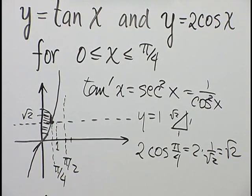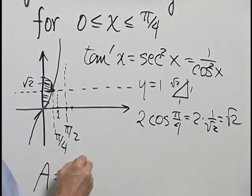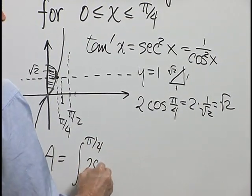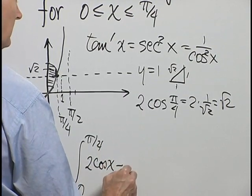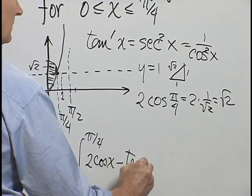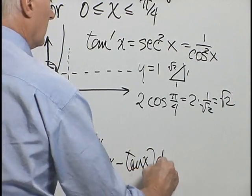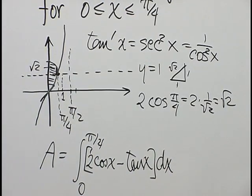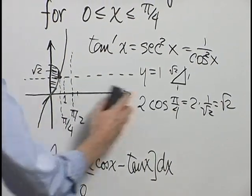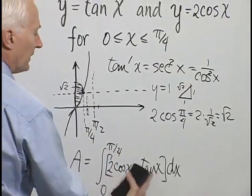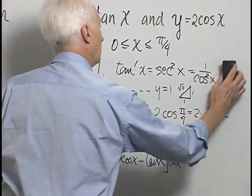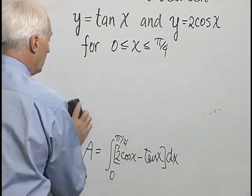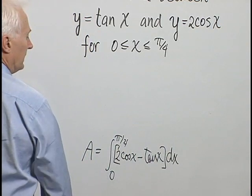The area between tangent of x and 2 cosine x is the definite integral from 0 to pi over 4 of 2 cosine x minus tangent of x dx. Now that we've done these calculations to assure ourselves that we have the right definite integral to compute, let's erase our picture and compute the definite integral.